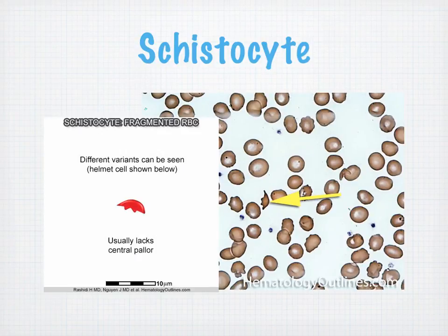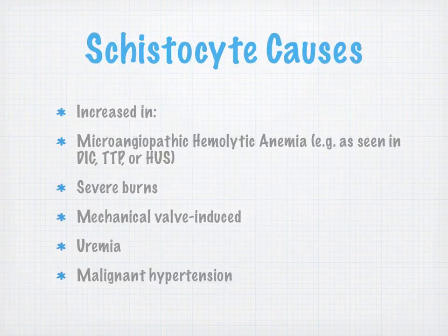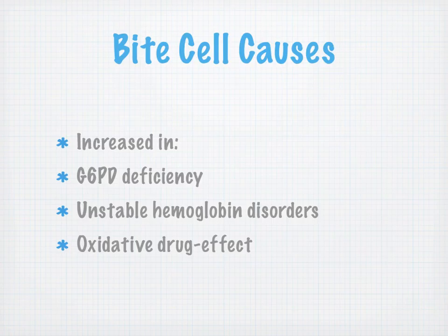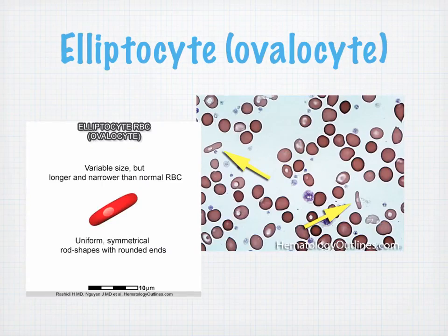Helmet cells or schistocytes usually lack central pallor. Schistocyte causes include microangiopathic hemolytic anemia, severe burns, and mechanical causes such as prosthetic heart valves chewing them up. Bite cells look like they've been bitten — bite cell causes include G6PD deficiency (there are your fava beans), unstable hemoglobin disorders, and oxidative drug effect. Ovalocytes or elliptocytes are rod-shaped with rounded ends, increased in severe iron deficiency anemia and some hereditary conditions.